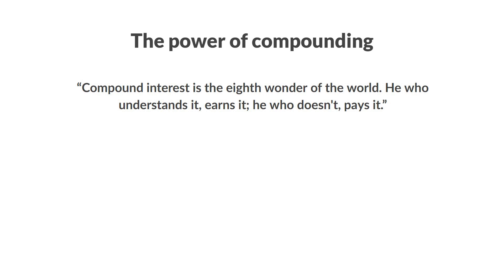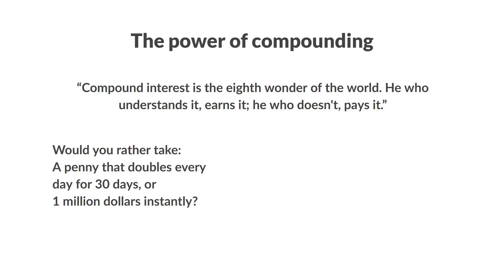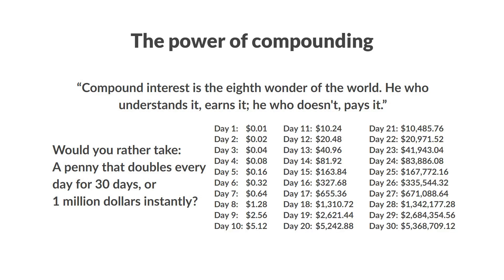You've probably already been asked the classic question: would you rather take a penny that doubles every day for 30 days, or 1 million dollars instantly? Which one would you take? Let's take a look at what happens to the penny. As you can see, it's worth over 5 million dollars after 30 days. That's the power of compounding right there.